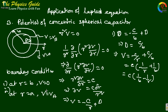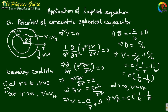Now applying boundary condition two — at r = a, V = Va — we get Va = C(1/b - 1/a). This implies C = Va / (1/b - 1/a).